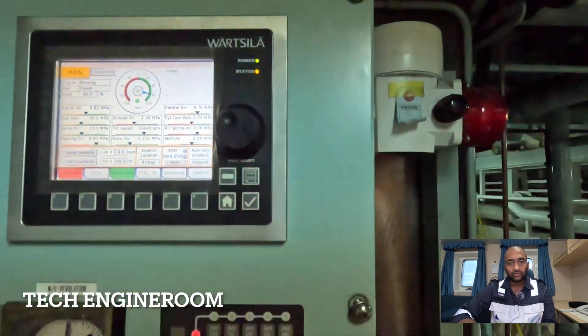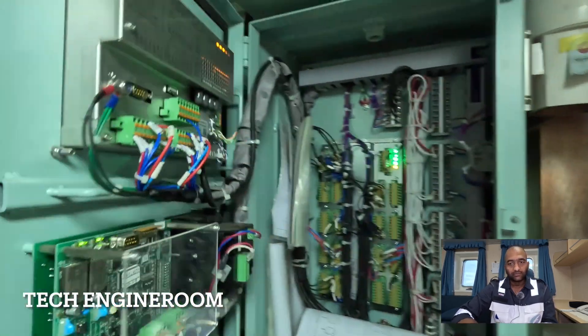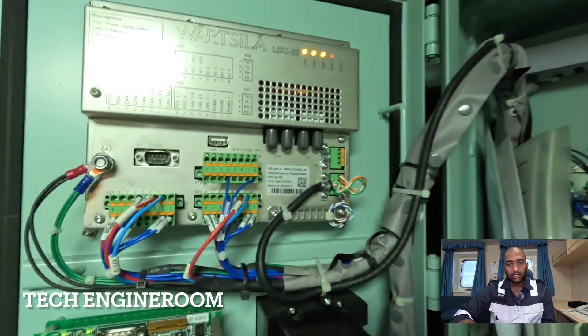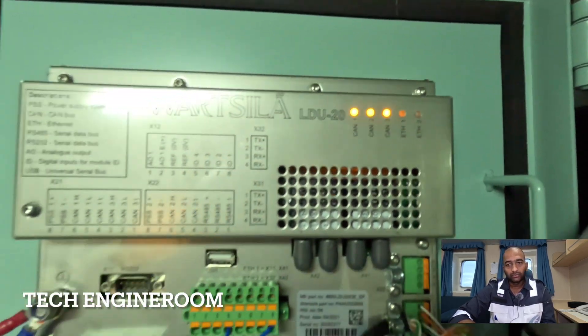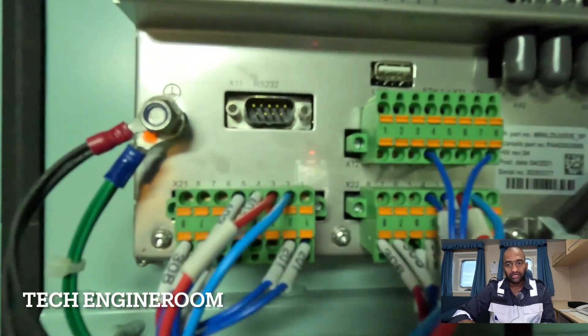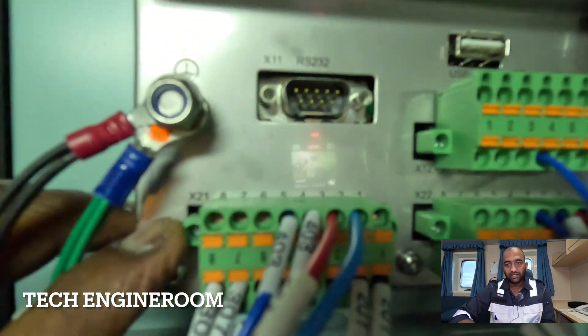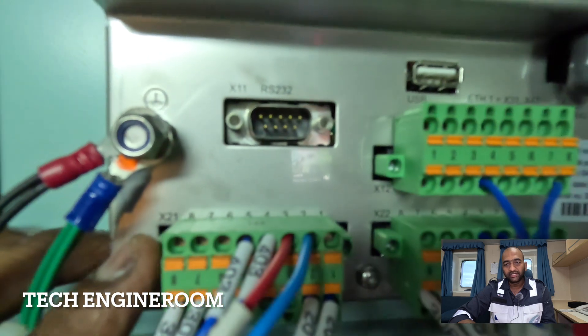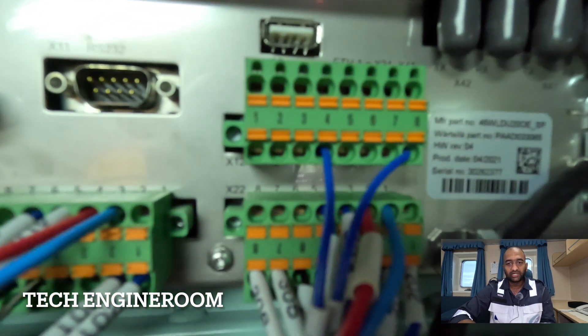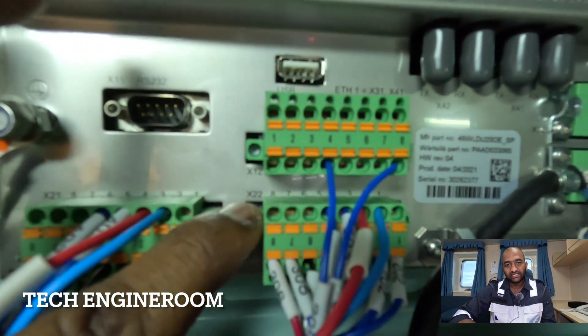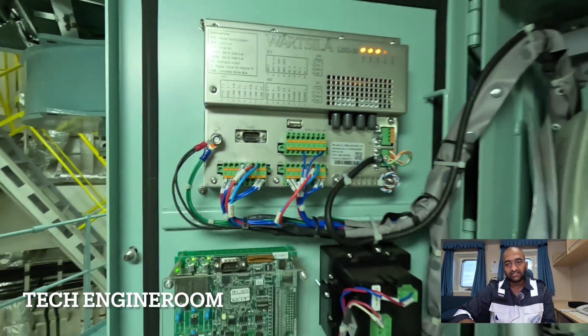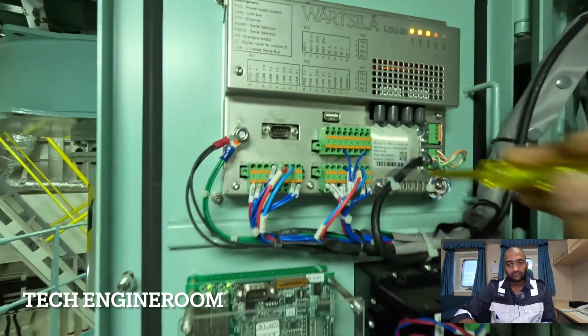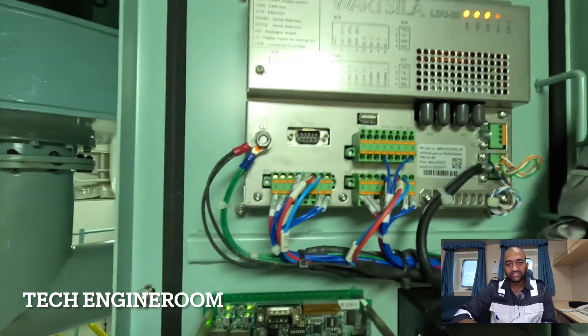So then engineers, how to reset these alarms? First open this panel and you can find these two plugs - one is x21 and one is x22. These two plugs we have to remove to reset this frozen LDU, which should be done in systematic order. First we should remove x22.